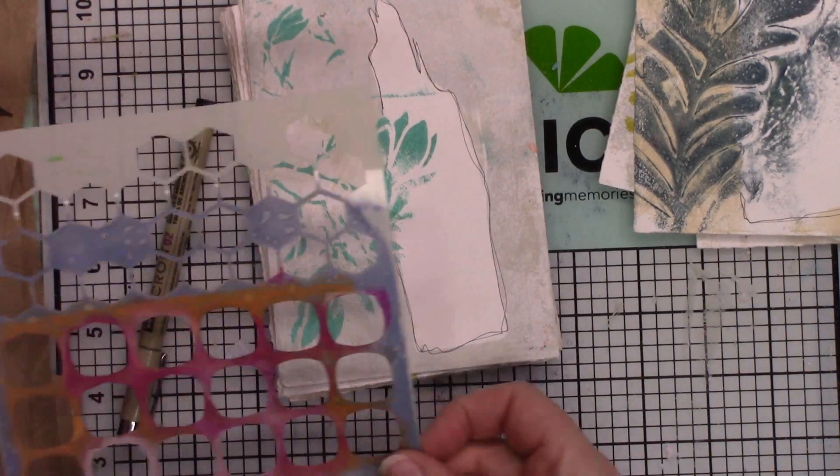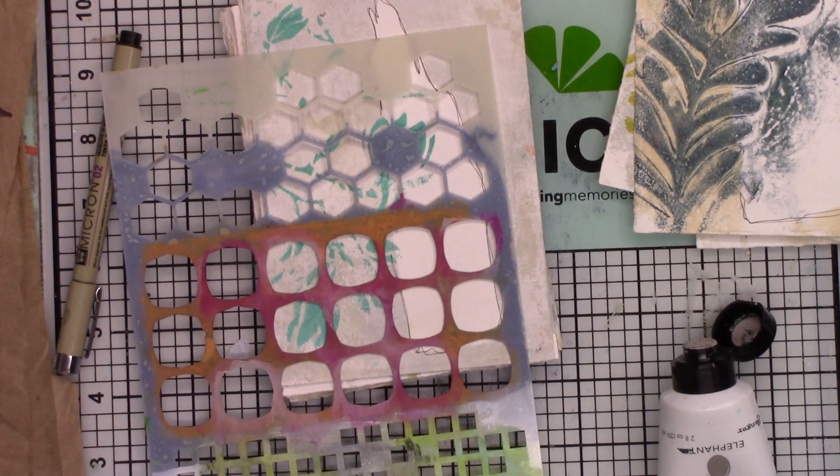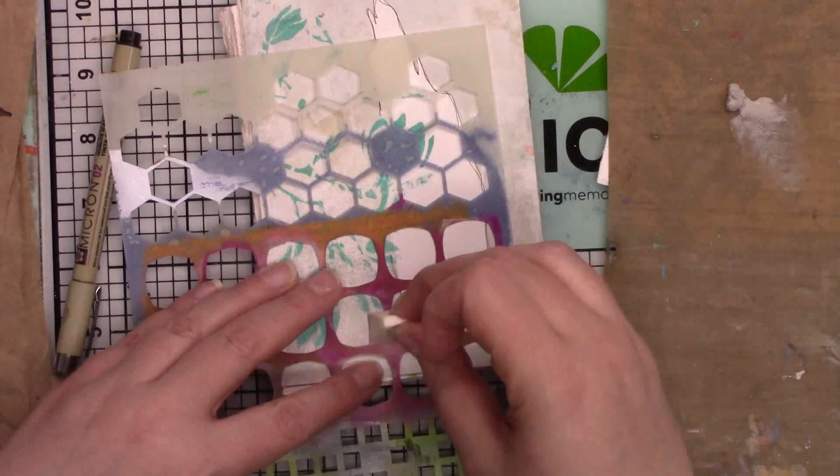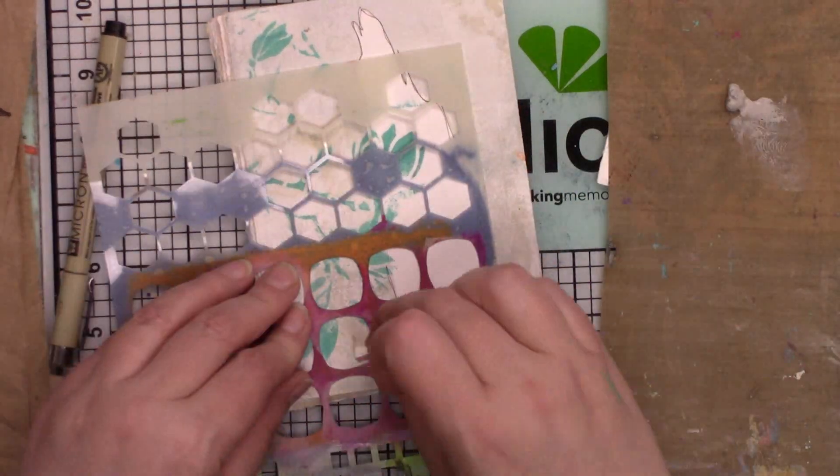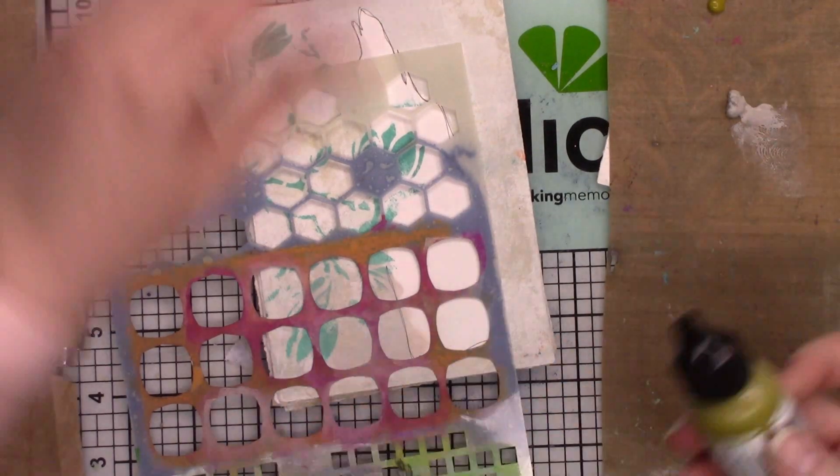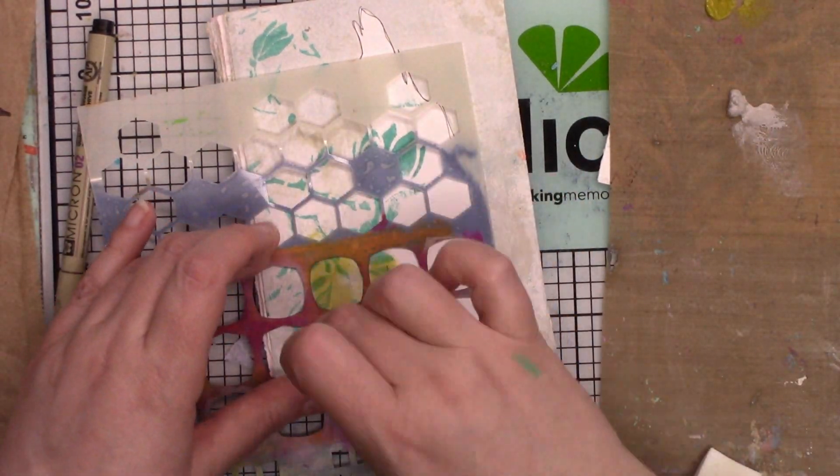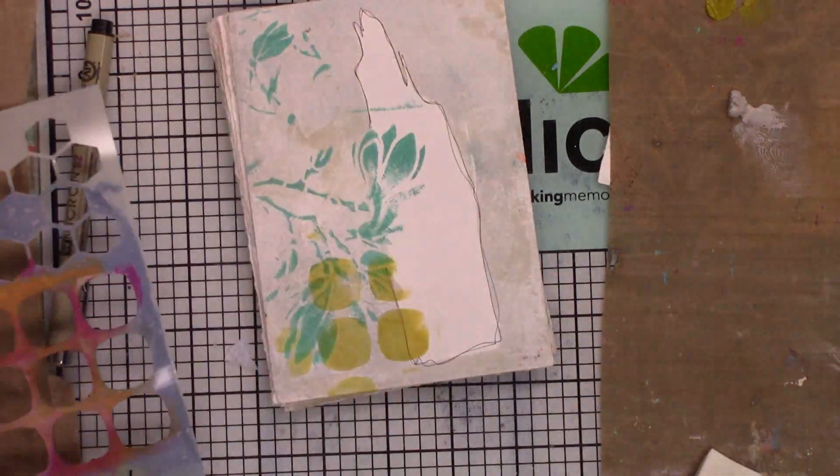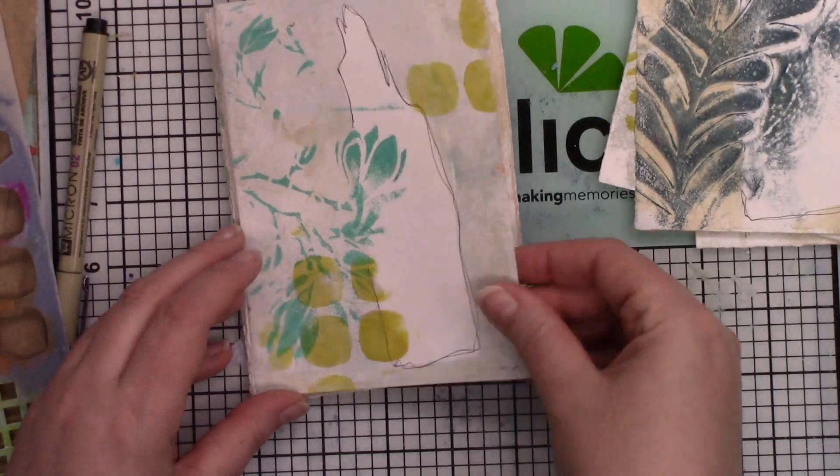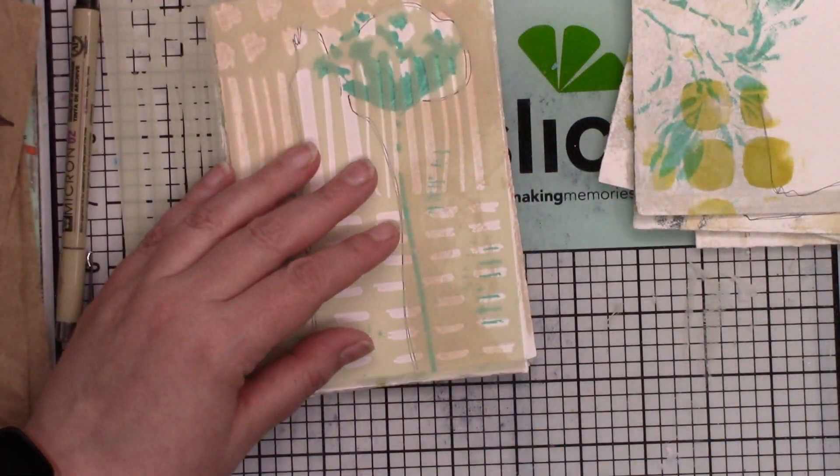On some of the other pages I went in with a couple more stencils in more geometric shapes, quite simple, and I used light colors mostly for the stenciling. The two stencils I used for this process are both Dina Wakely stencils—one is called Shape Mashup and the other one is called Marks.